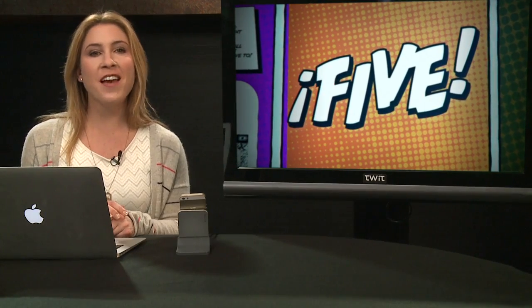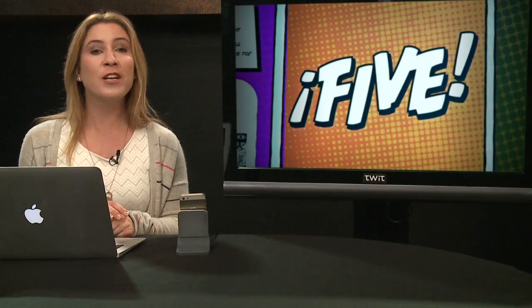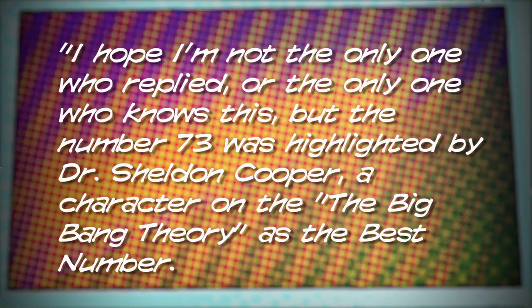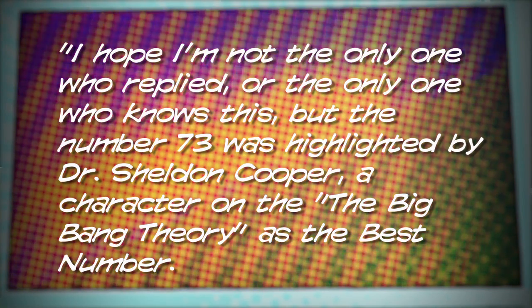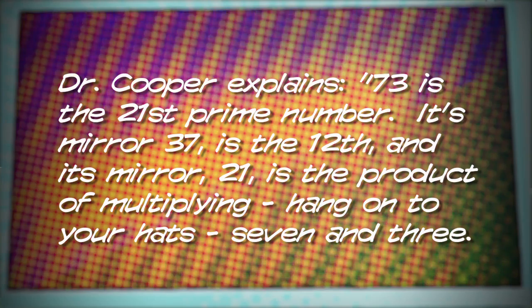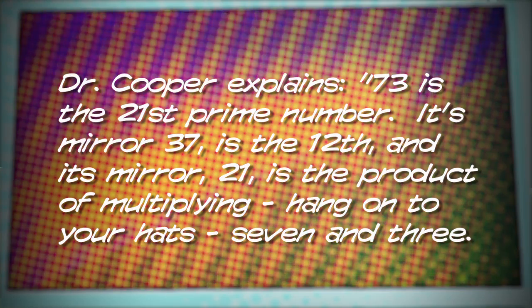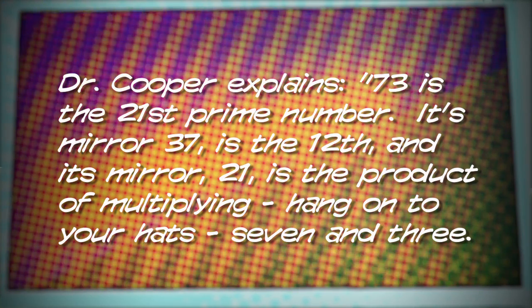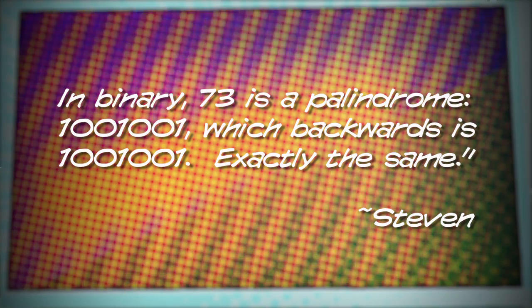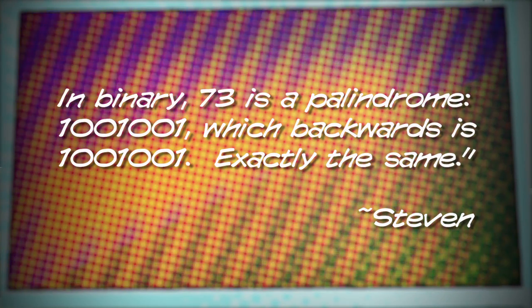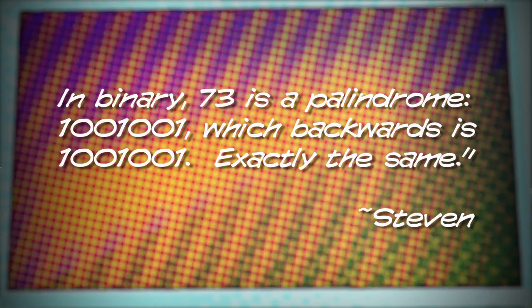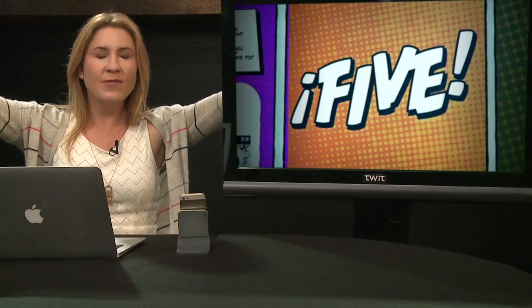Last week I mentioned not knowing the significance of episode 73. Listener Steven wrote in: the number 73 was highlighted by Dr. Sheldon Cooper on The Big Bang Theory as the best number. Sheldon explains: 73 is the 21st prime number, its mirror 37 is the 12th prime, and 21 is the product of 7 and 3. In binary, 73 is 1001001 — which is a palindrome, reading the same forwards and backwards. Mind blown.